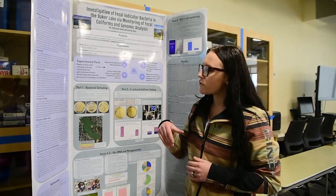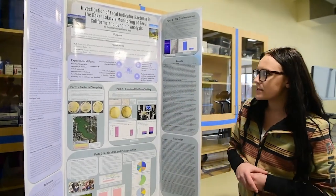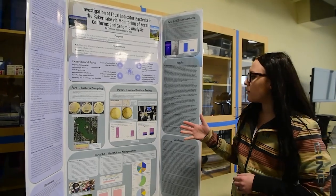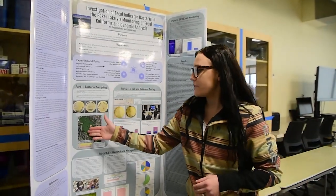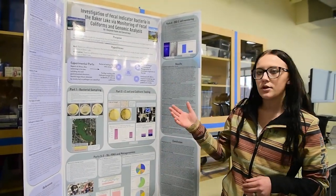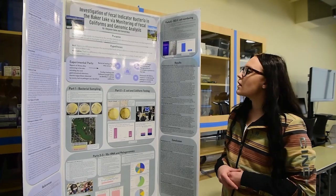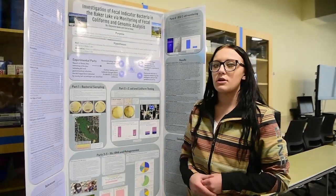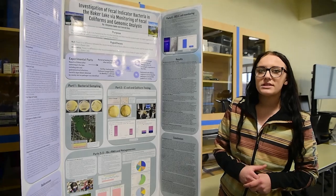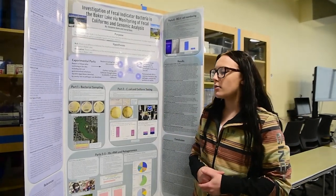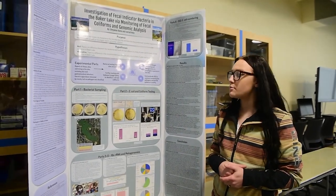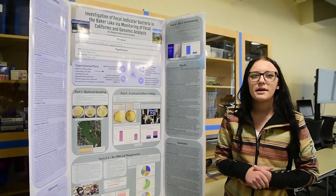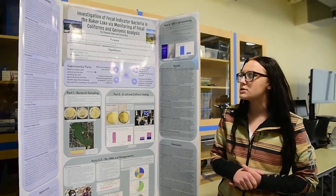Our sophomore class helped us with sampling all around our lake, and there were 20 different samples that were collected. Not knowing exactly what was on our plates, we went into further investigation. We purchased special coliscan plates called easy gel coliscan plates that identify E. coli and coliforms.